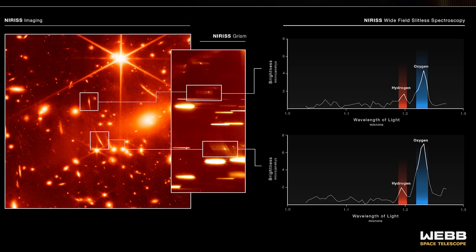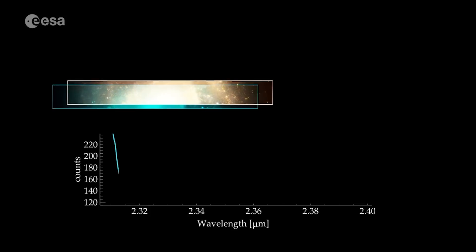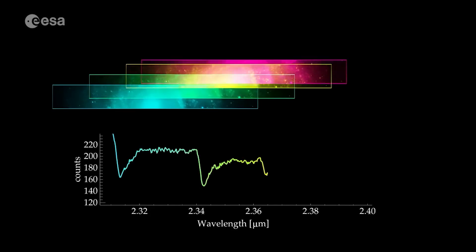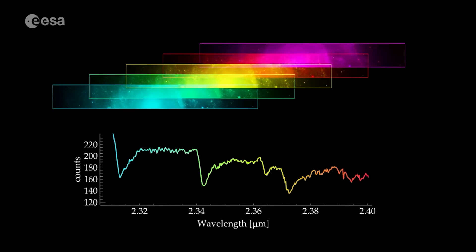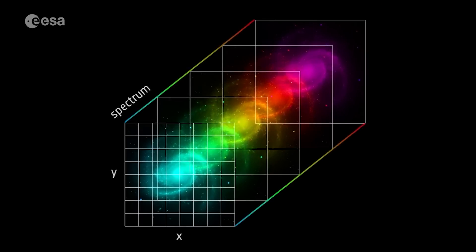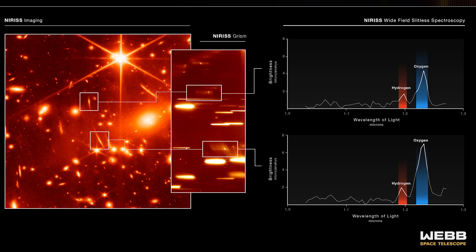The power of NIRSpec is it takes spectra of every object in its field of view at the same time. In this case, this includes these repeated images. The spectrograph then spreads out the light it receives to examine exactly how much of each wavelength it saw. We can see here the spectra of the two objects are exactly the same. The exact same amount of each wavelength. And this tells us it's the same object.